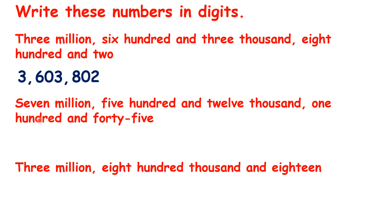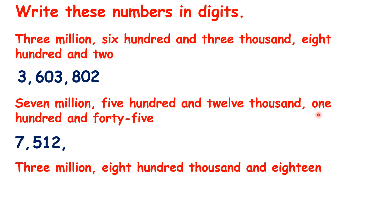Now, on to our next number. We have seven million, so seven comma. Then we have five hundred and twelve thousand, so that's five hundred and twelve comma. Then we read the rest of our number, and we have one hundred and forty-five.